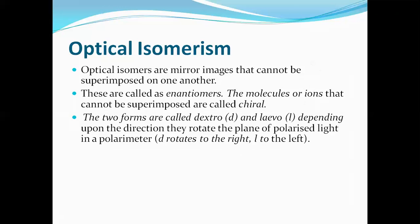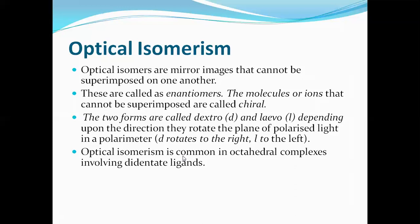The optically active compounds are always enantiomers. Enantiomers are non-superimposable mirror images of each other. Chiral compounds are non-superimposable on their mirror images; such compounds are called enantiomers, and enantiomers are always optically active. There are two types: dextrorotatory, which rotates the plane of polarized light clockwise, and levorotatory, which rotates it anticlockwise. This optical isomerism is common in octahedral complexes involving bidentate ligands such as ethylenediamine or oxalate.